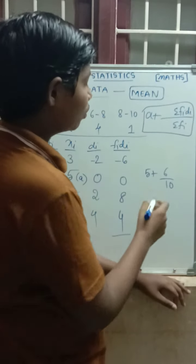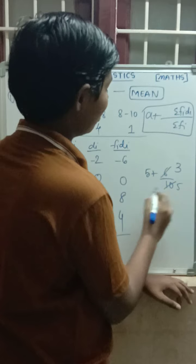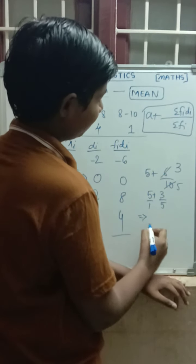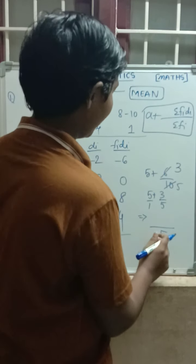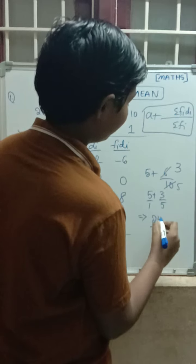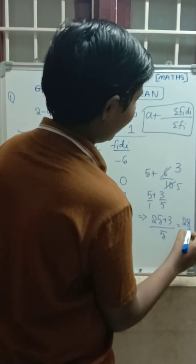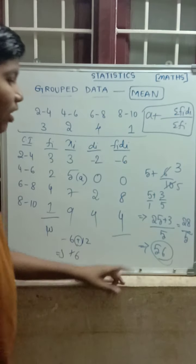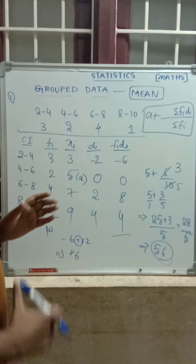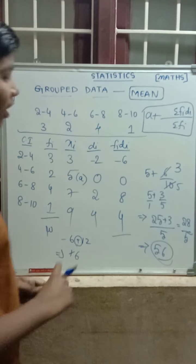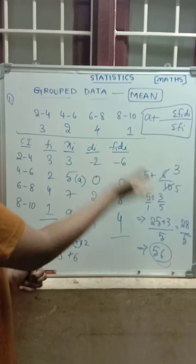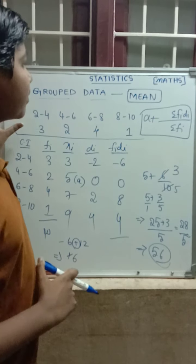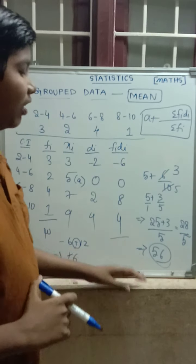So the result is 5 plus 6 by 10. We can cancel: 6/10 simplifies — taking LCM of 1 and 5, LCM = 5. So 5 plus 3/5. Converting: (5 × 5 + 3)/5 = (25 + 3)/5 = 28/5 = 5.6. In the direct method we also got 5.6, and in the assumed mean method we also get 5.6 — the same value.